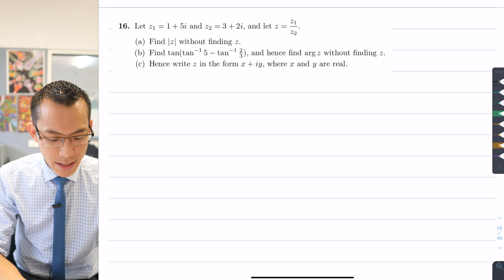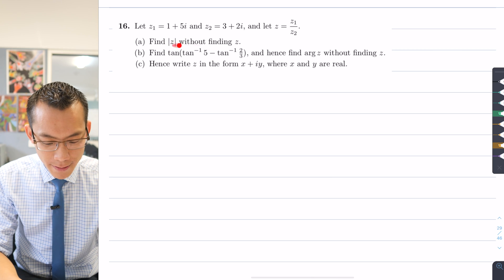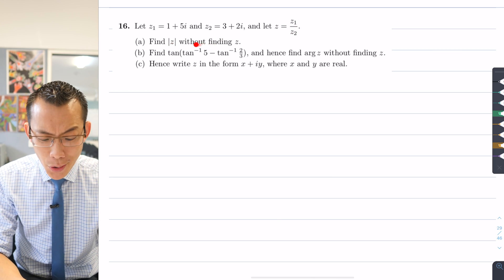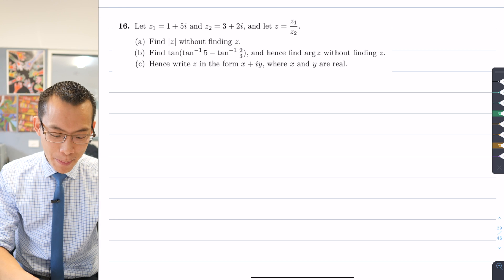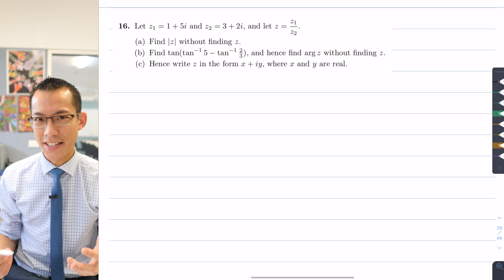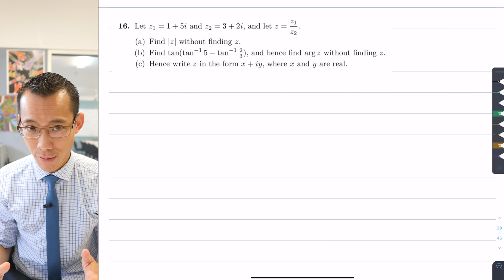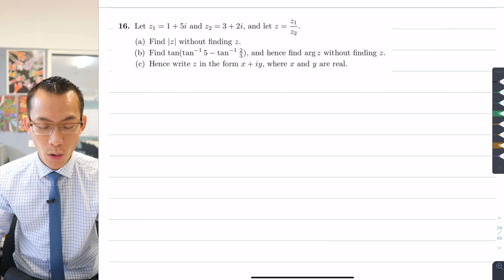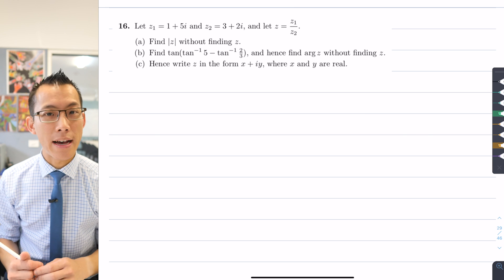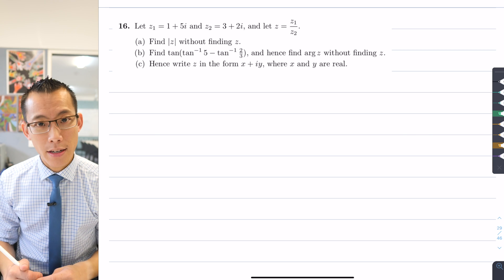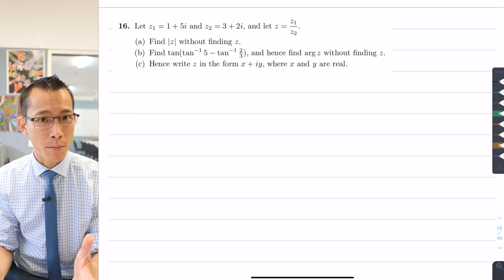First thing says find the modulus of z, that's this quotient here, without finding z. Okay, so you can see on both part a and b what they're trying to say is don't just divide z1 divided by z2, see if you can work out the modulus and in a second the argument without actually evaluating the number itself.